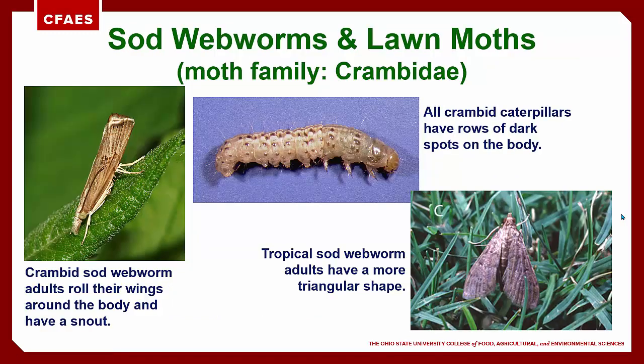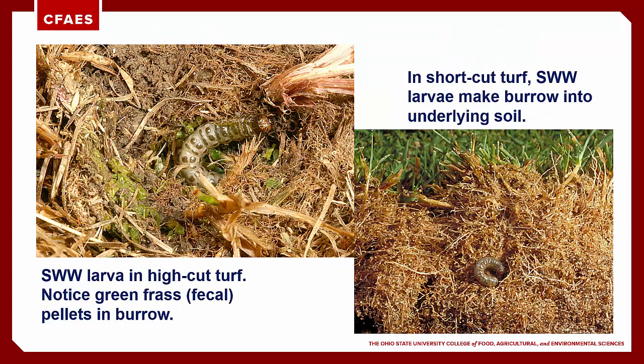The typical crammed-type sod webworms have adults that roll their wings around the body when at rest, supposedly to look like dead rolled-up pieces of grass foliage. The tropical sod webworms have adults that hold their wings flat and out to the side in a triangular shape. Both groups have small larvae that are generally light tan or greenish if actively feeding on grass blades, and these larvae are covered with rows of dark spots. In higher-cut turf, sod webworm larvae usually build a burrow in the thatch layer lined with loose strands of silk, emerging at night to feed on grass blades. In short-cut turf, they dig deeper into the underlying soil and extend their heads from burrows at night to feed just below the mowing level.